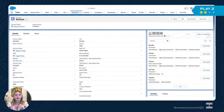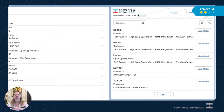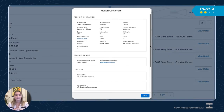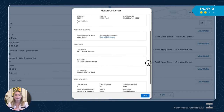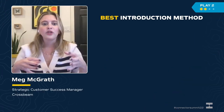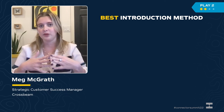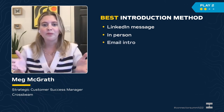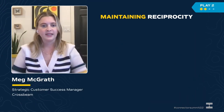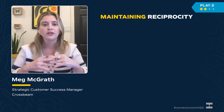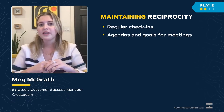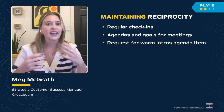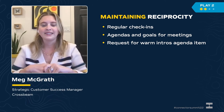Here on my screen you can see my prospect SkuVault. I can see that my partner Holver already has SkuVault as a customer. I can click into the widget and view more details to see if this is a potential account that Holver may be able to help me with through an introduction. From there, work with your partners to understand the best way to make an introduction — whether through a LinkedIn message, in person at a conference, or through a good old-fashioned email intro. A good way to maintain reciprocity is through regular check-ins, agendas, and goals for your meetings, and always adding a request for warm intros as an agenda item.